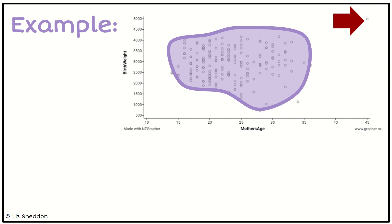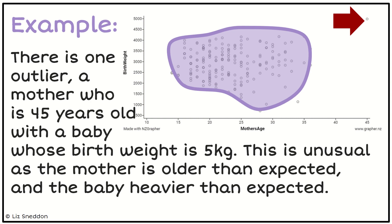That point is going to be classified as an outlier. When we write about it, we want to identify the coordinates of that point. This point represents a mother who is about 45 years old and whose baby's birth weight is around five kilograms. I'll write a sentence about why it's unusual: the mother is older than expected compared to the rest of the pattern, and the baby is heavier than expected compared to the rest of the pattern.